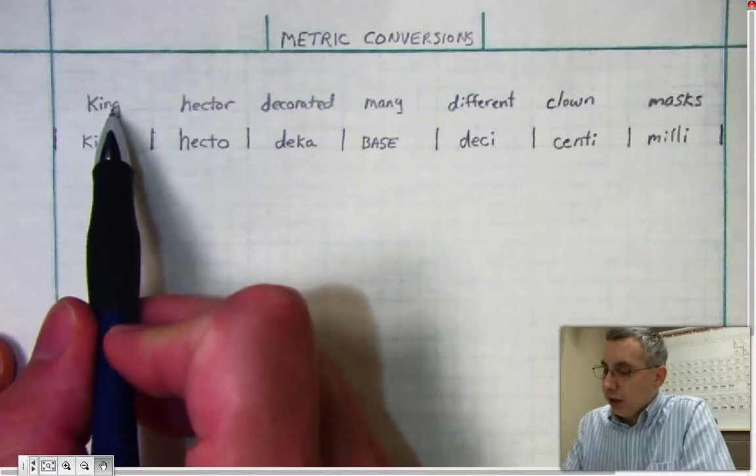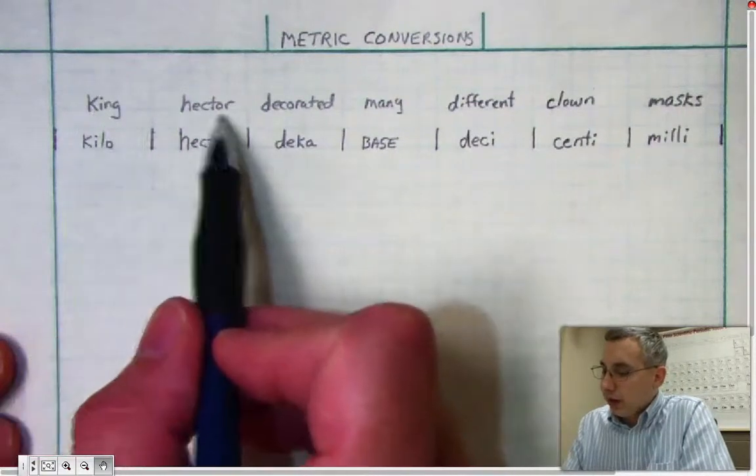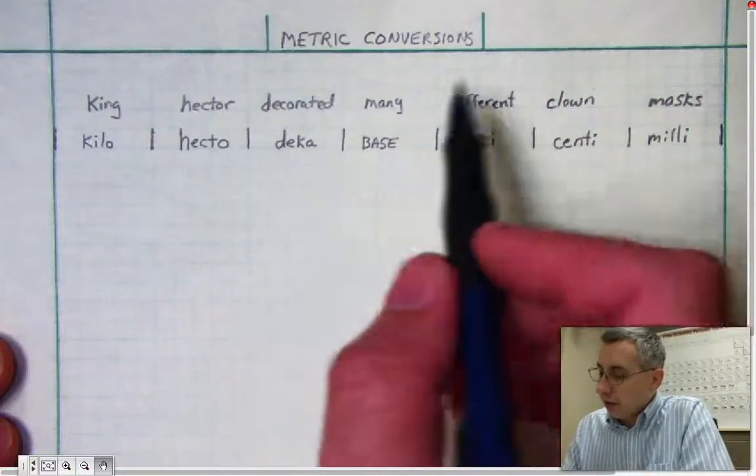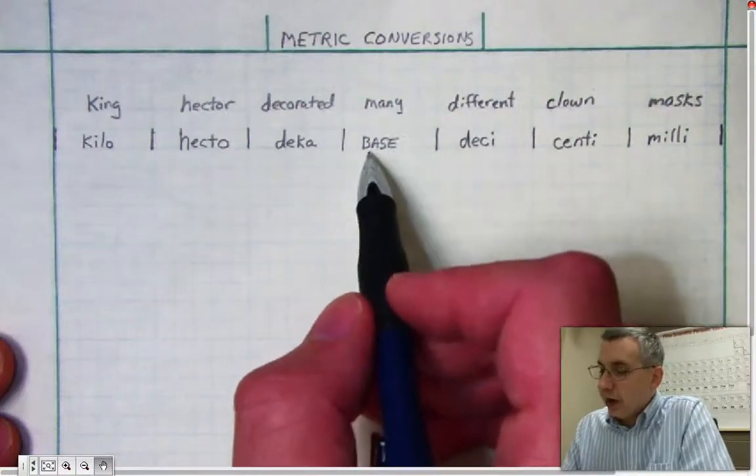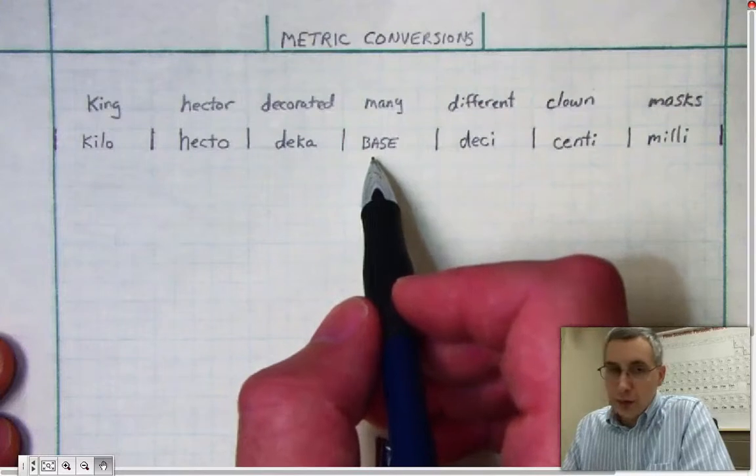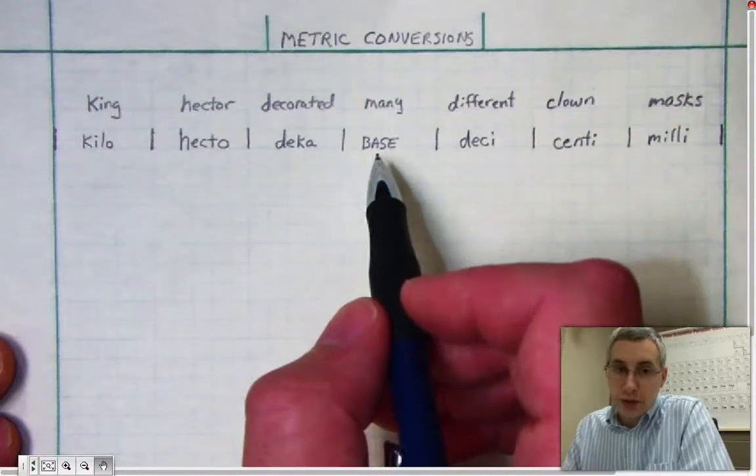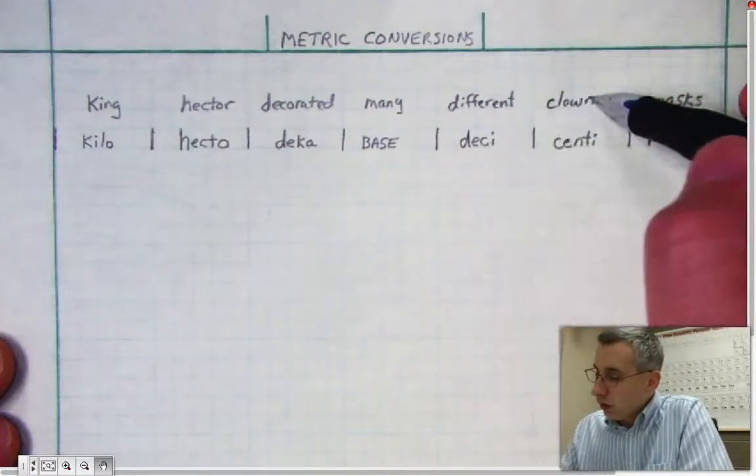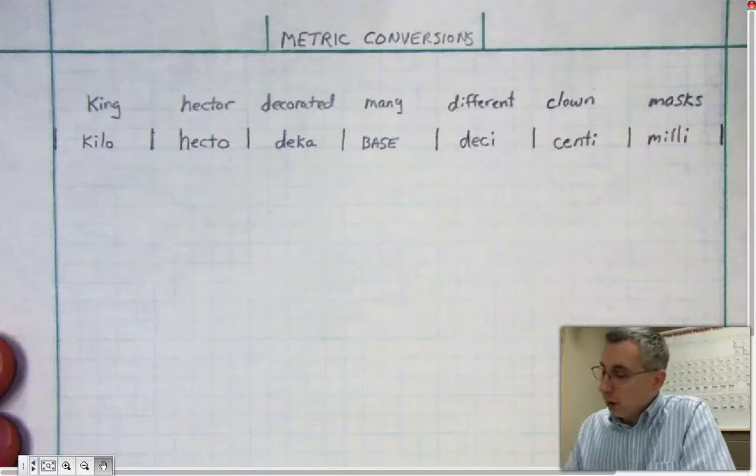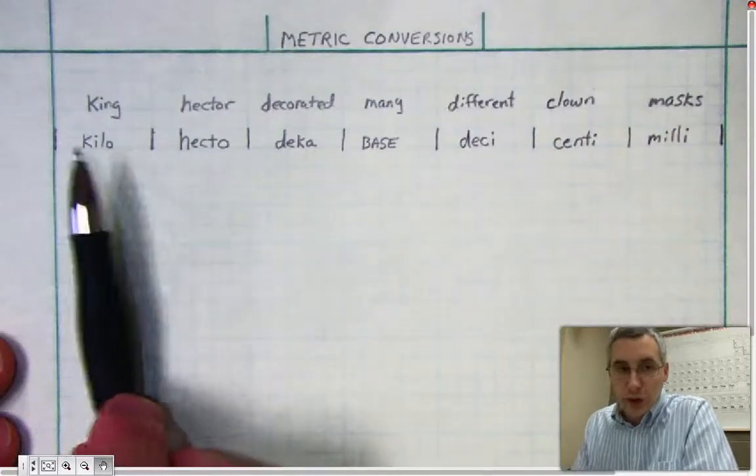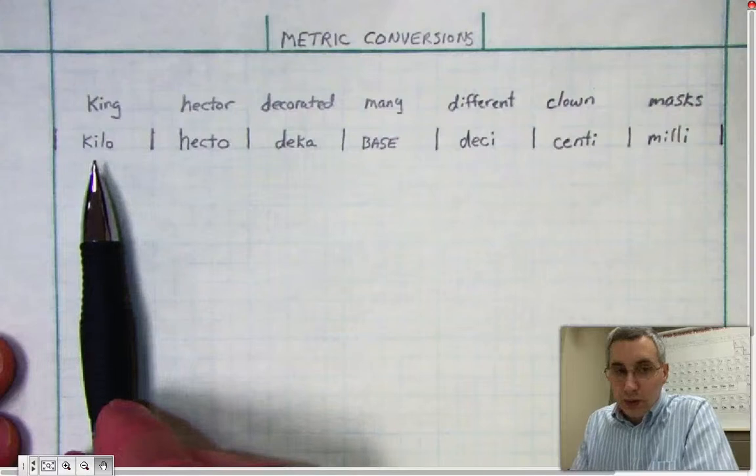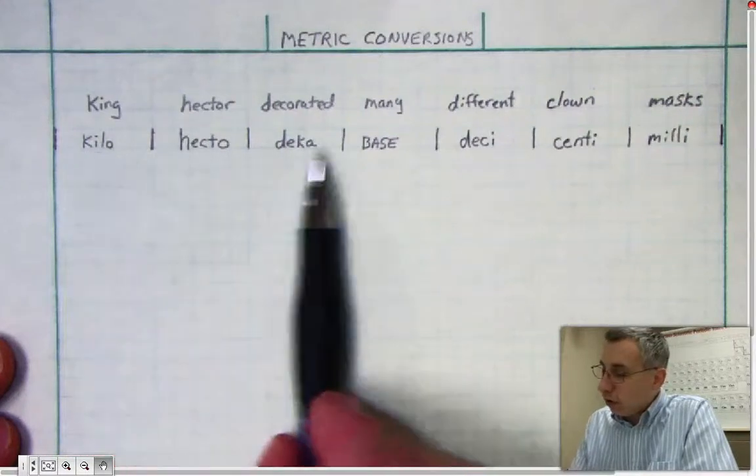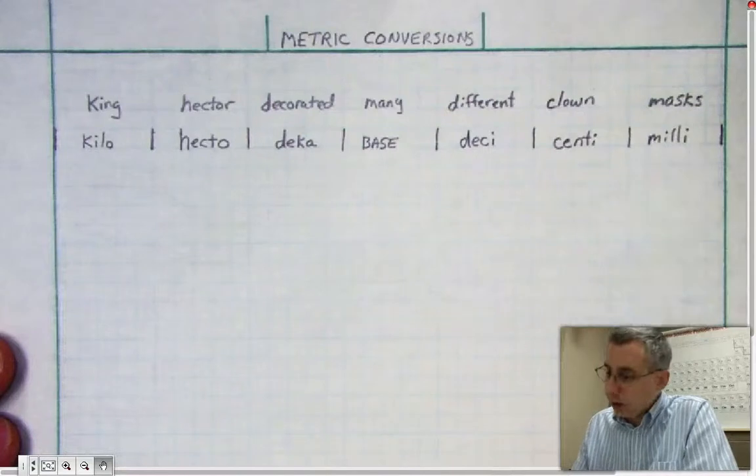So K for King reminds you it's Kilo, Hector sounds like Hecto, Decorated is Deca. Now Many stands for Meter because often meter is the base unit, but it's not always meter - it could be liter, it could be gram, it could even be some other units. Different is for Deci, Clown is Centi, and Masks for Milli. So now you know how to write these prefixes in order. Now it's important when you write these that you write them in this order: you start with Kilo on the left and work over to Milli on the right.